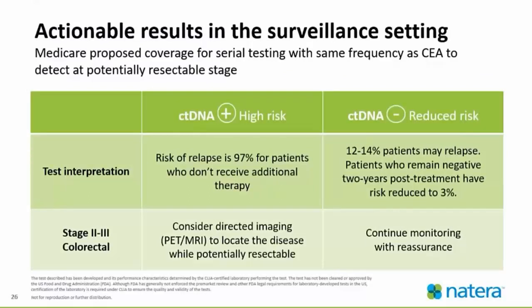Actionable results in the surveillance setting: Medicare proposed coverage for serial testing with the same frequency as CEA. When a patient is having a CEA drawn, that's a time when Signatera testing can also be drawn. If ctDNA is positive, that patient would be considered high risk — 97% of patients who don't receive additional therapy will relapse — and additional imaging such as PET or MRI may be warranted, especially if ctDNA is positive and CT imaging is negative. If ctDNA is negative, that patient is considered reduced risk — 12 to 14% of patients may relapse, but patients who remain negative two years post-treatment have a risk reduced to 3%. It is recommended to continue to monitor with reassurance.